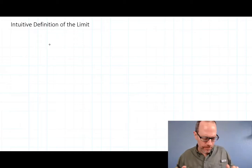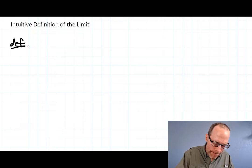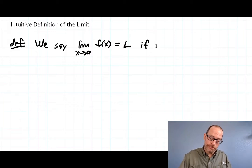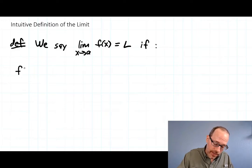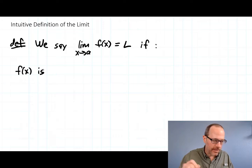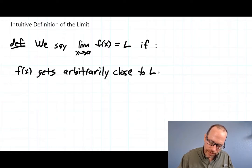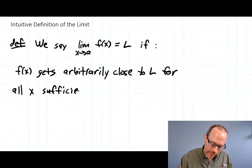Here is the intuitive definition. We say the limit as x goes to a of f(x) is L if f(x) gets arbitrarily close to L for all x sufficiently close to a.